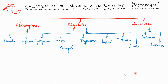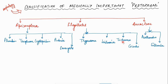Protozoa are unicellular eukaryotes that are medically very important. On the basis of their morphology, they are classified into three groups: Apicomplexa, flagellates, and amoeba. Apicomplexa examples are Plasmodium, Toxoplasma, Cryptosporidium, Babesia, and Sarcocystis. Flagellates are Trypanosoma, Leishmania, Trichomonas, and Giardia. Amoeba include Acanthamoeba and Entamoeba.